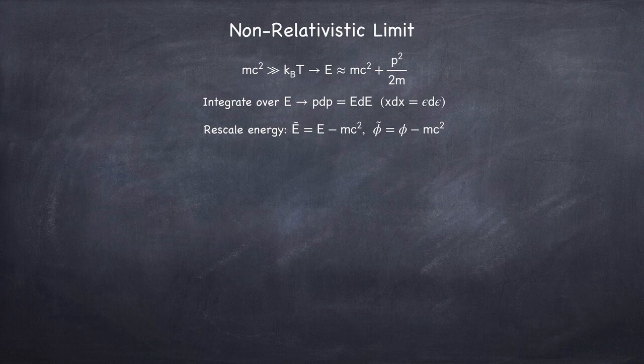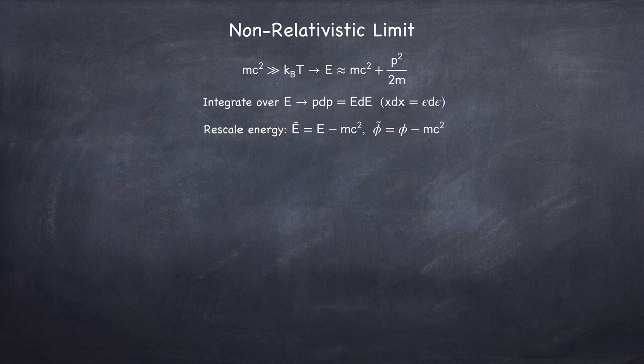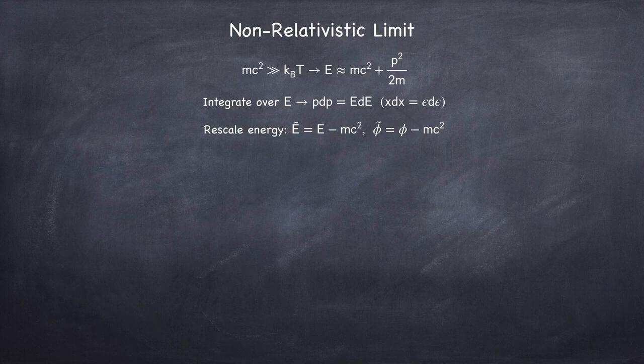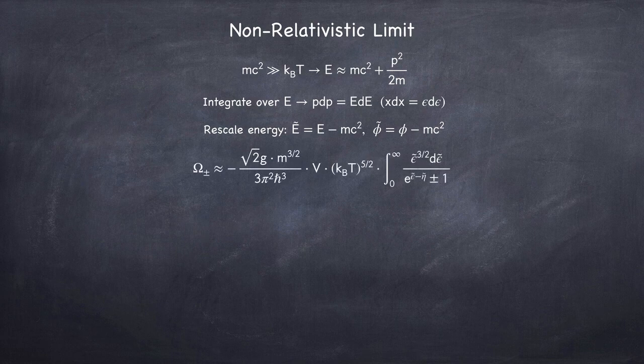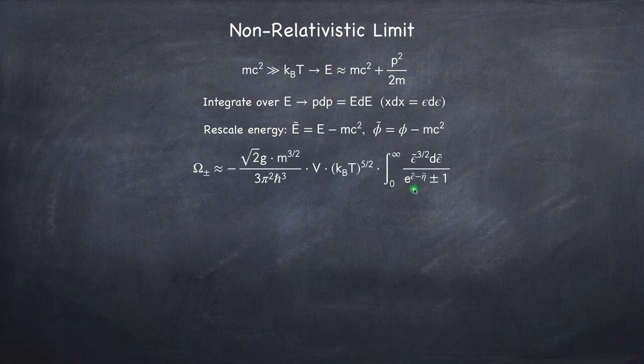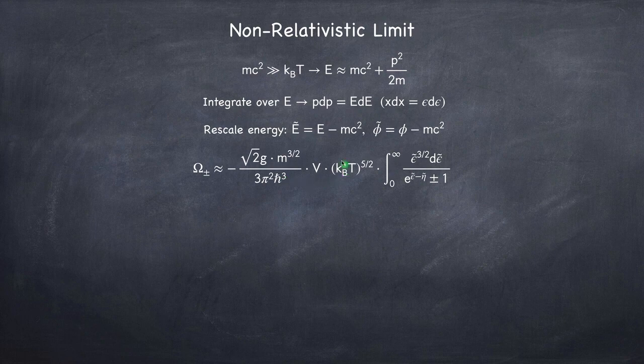So e tilde will be the energy minus the rest mass, and phi tilde will be the chemical potential minus the rest mass. And after making these substitutions, the Landau potential will take the following form. So you can see this is still a Bose or Fermi integral. It's just that the degree now is three halves, where originally it was three. And we've got a slightly different factor out front.